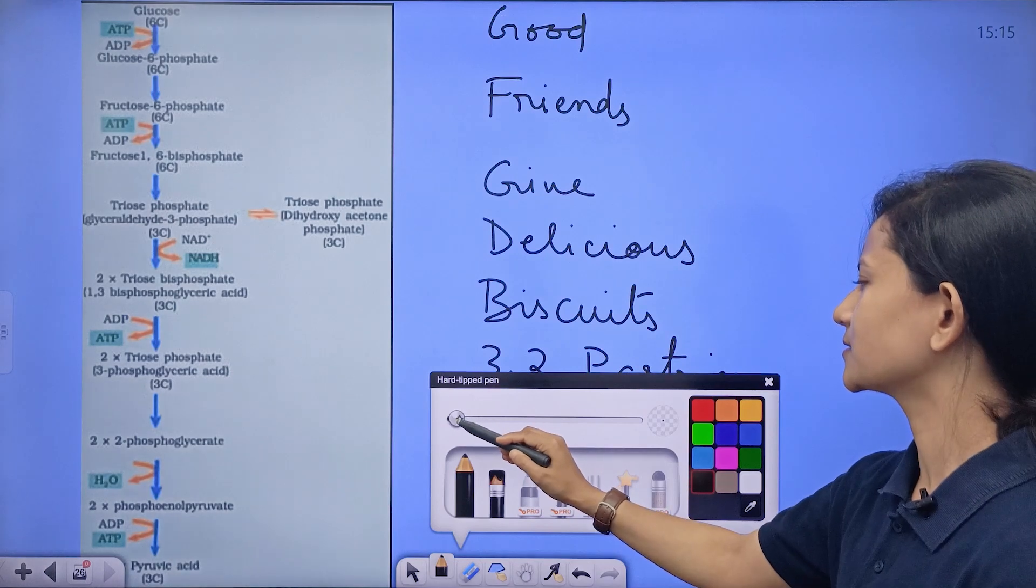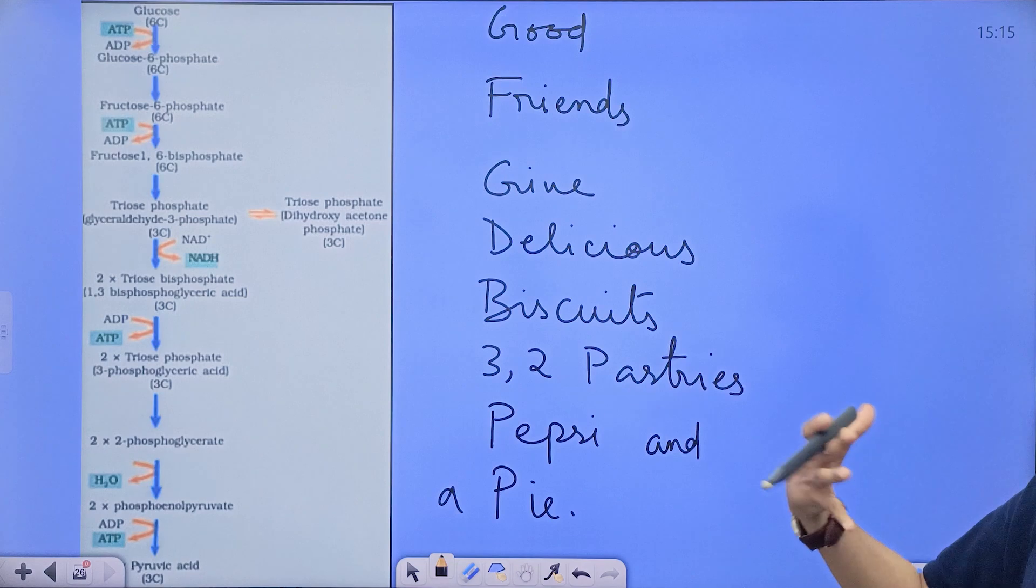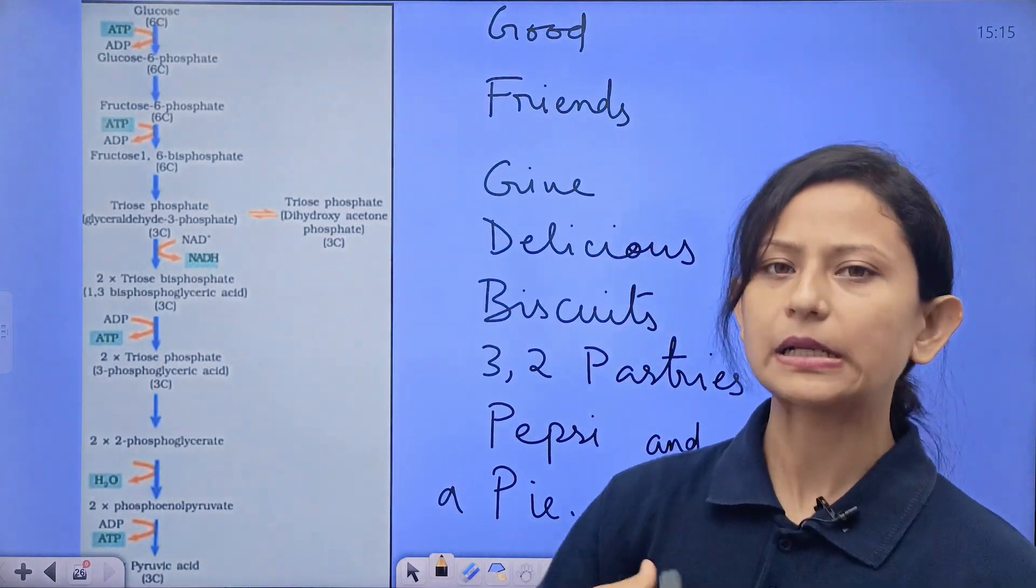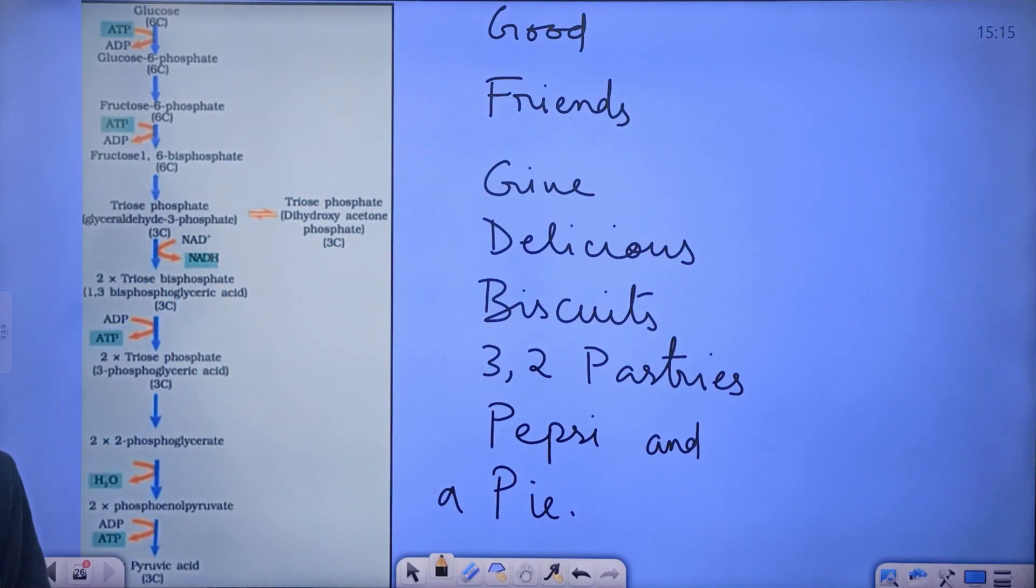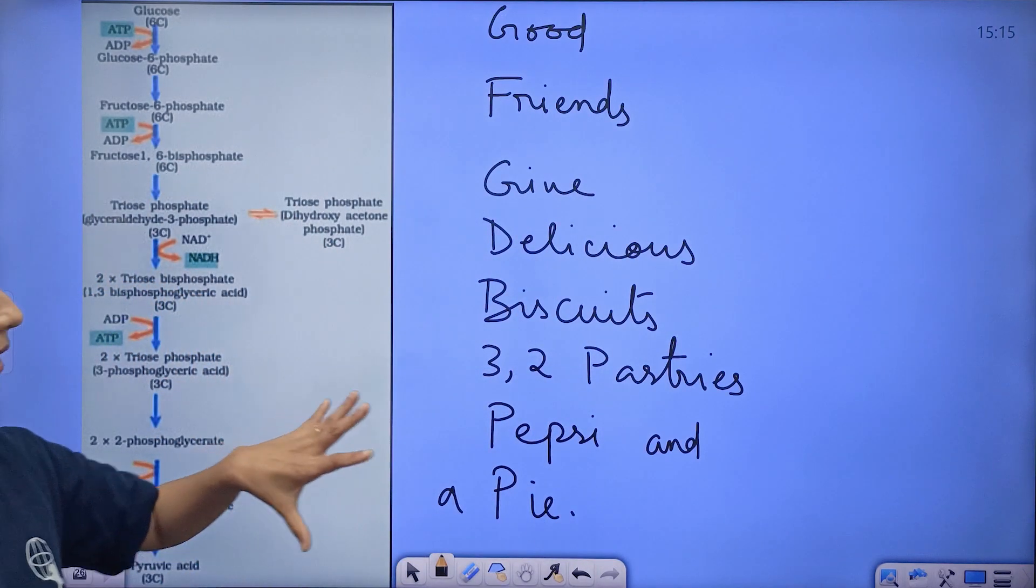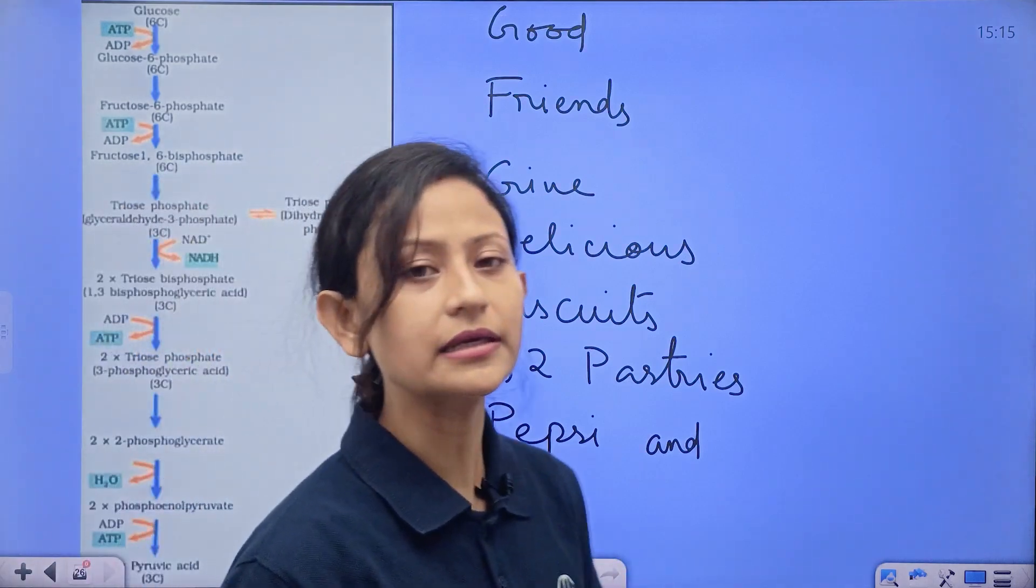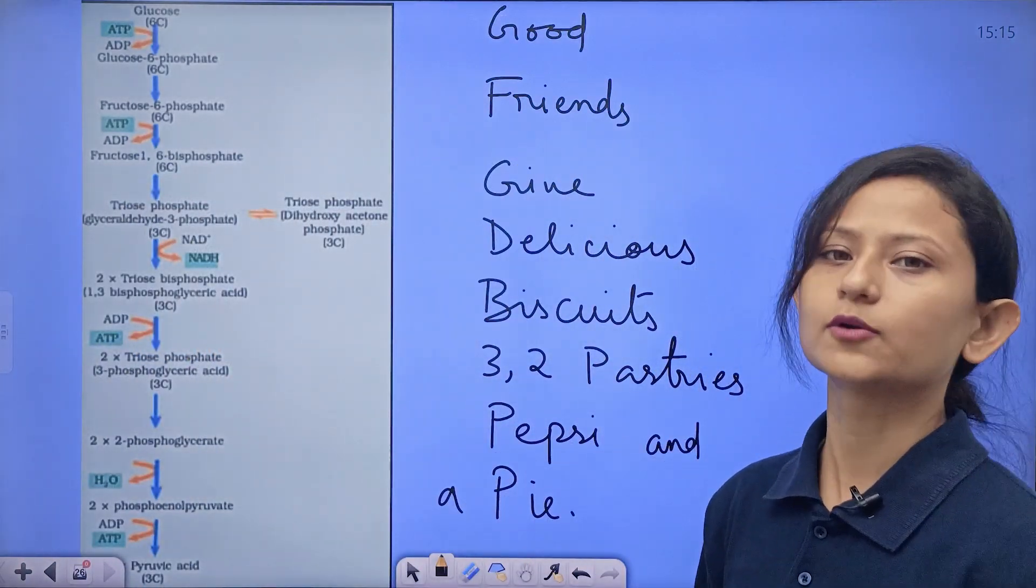Now can you remember this sentence? I think it's easy to remember. What is written in the sentence? Good friends give delicious biscuits, 3,2 pastries, Pepsi and a pie. How is this sentence connected to glycolysis? Each word represents a product formed in the glycolysis pathway, starting with glucose.